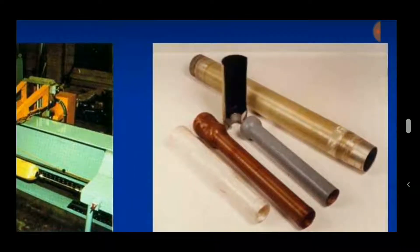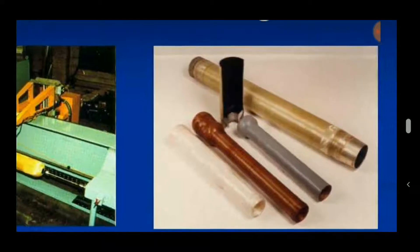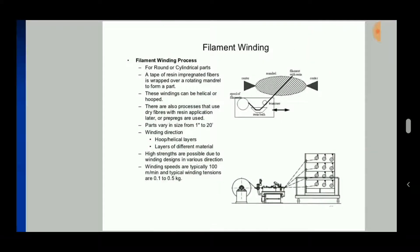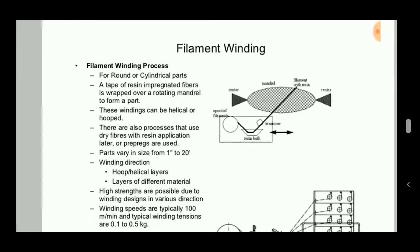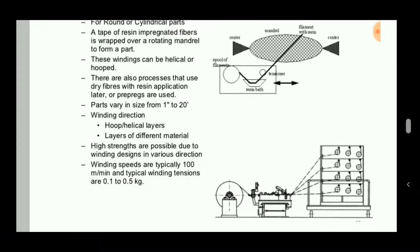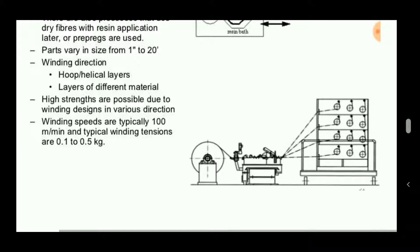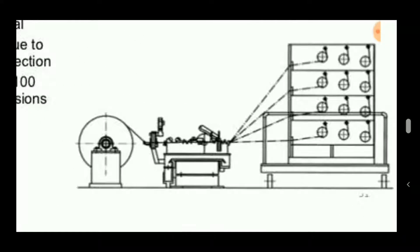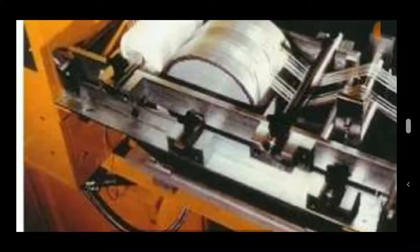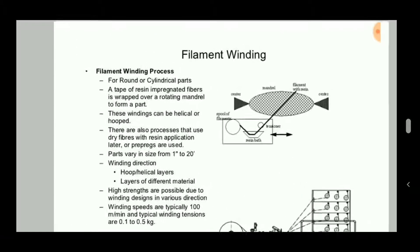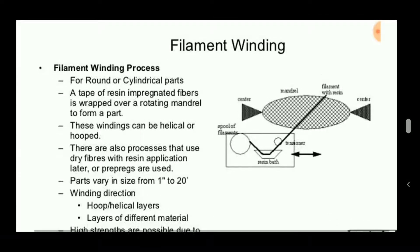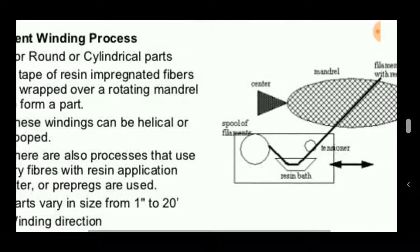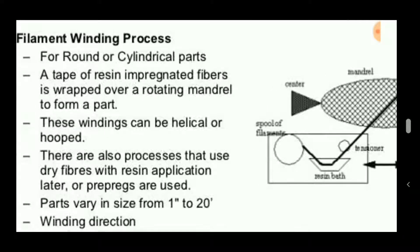The product formed can be used as a pipe for water supply, gas storage, and similar applications. The filament winding process can use a single filament or multi-filament to enhance strength and mechanical properties. It can be used for round or cylindrical parts, where a tape of resin-impregnated fibers is wrapped over the rotating mandrel to form a part.